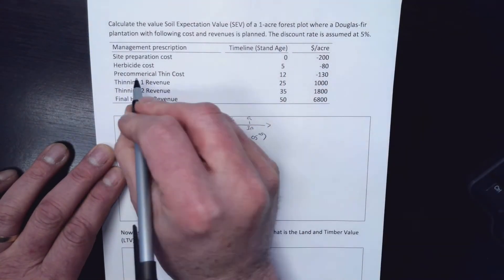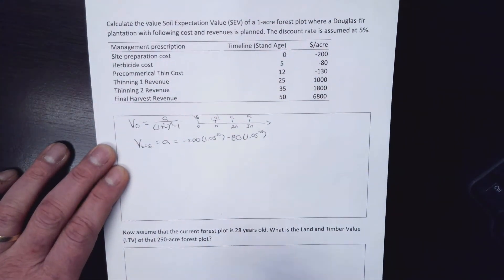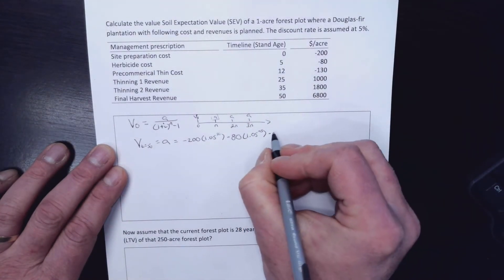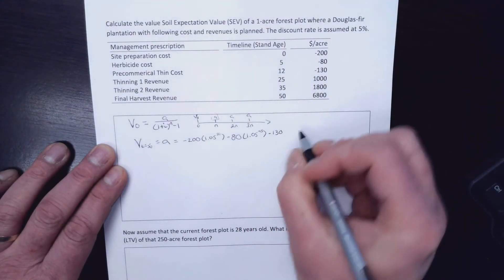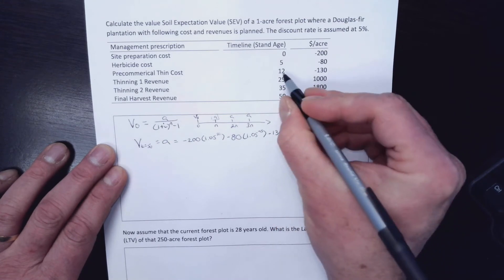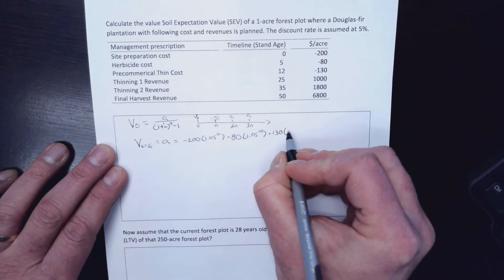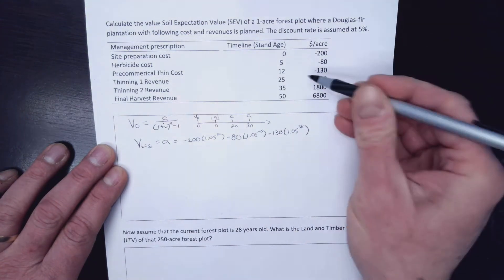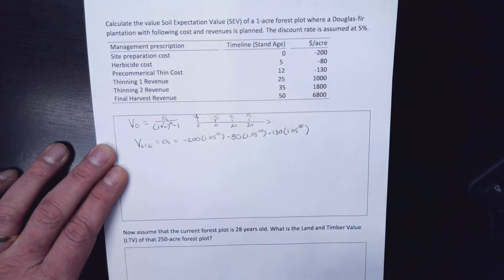The next one is our pre-commercial thin. So we're going to go in and we're going to cut some of the small trees and leave our crop trees so that things grow a little better. $130 is what that's going to cost per acre, but I need to slide it out 38 years. 1.05 to the 38. So it's already 12. That's me pushing it out there.